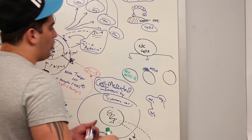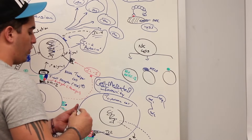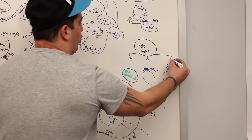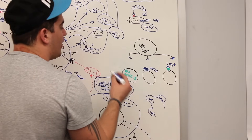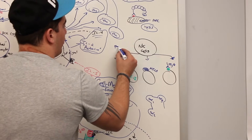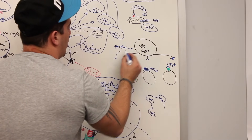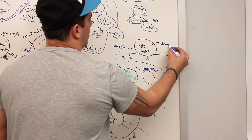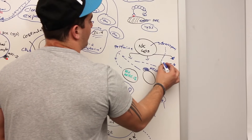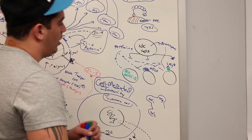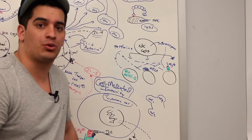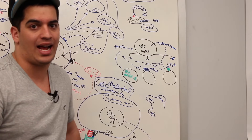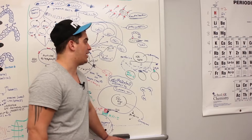Third, NK cells can also kill through IgG mechanisms — if there's a foreign antigen with an IgG antibody attached, they can recognize and kill that cell. The mechanism is the same as cytotoxic T cells: release perforins to create holes in the membrane, secrete granzymes through the pores, granzymes activate proapoptotic genes, Bax pulls BCL2 out of the mitochondria, cytochrome C activates caspases, leading to proteolytic destruction and apoptosis.